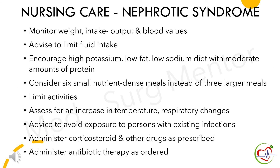Nursing care for patients with nephrotic syndrome includes: monitor weight, intake and output, and blood values; advise limiting fluid intake; encourage a high-potassium, low-fat, low-sodium diet with a moderate amount of protein; consider six small nutrient-dense meals instead of three larger meals; limit activities; and assist for any increase in temperature and respiratory changes.